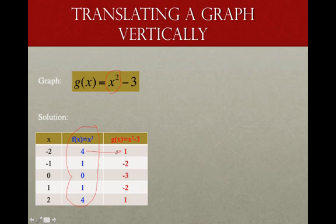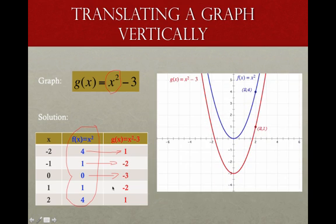4 minus 3 is 1. 1 minus 3, negative 2. 0 minus 3, negative 3. And so we can see this in our graph where we have our original function in blue. And my red shifted function has moved down three spots.